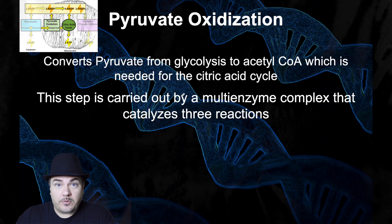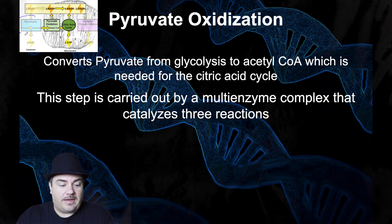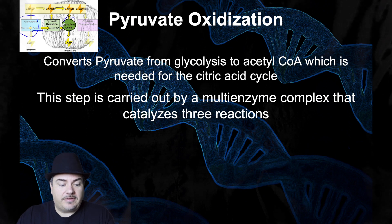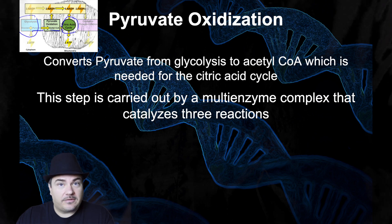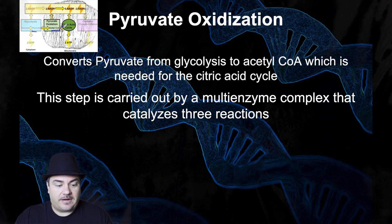Pyruvate oxidation takes pyruvate that was made during glycolysis and turns it into acetyl-CoA. The reason is that glycolysis ends with pyruvate, but the second main stage — the citric acid cycle — needs to start with acetyl-CoA. It can't start with pyruvate. So pyruvate oxidation takes pyruvate and turns it into acetyl-CoA so you can feed that acetyl-CoA into the citric acid cycle.